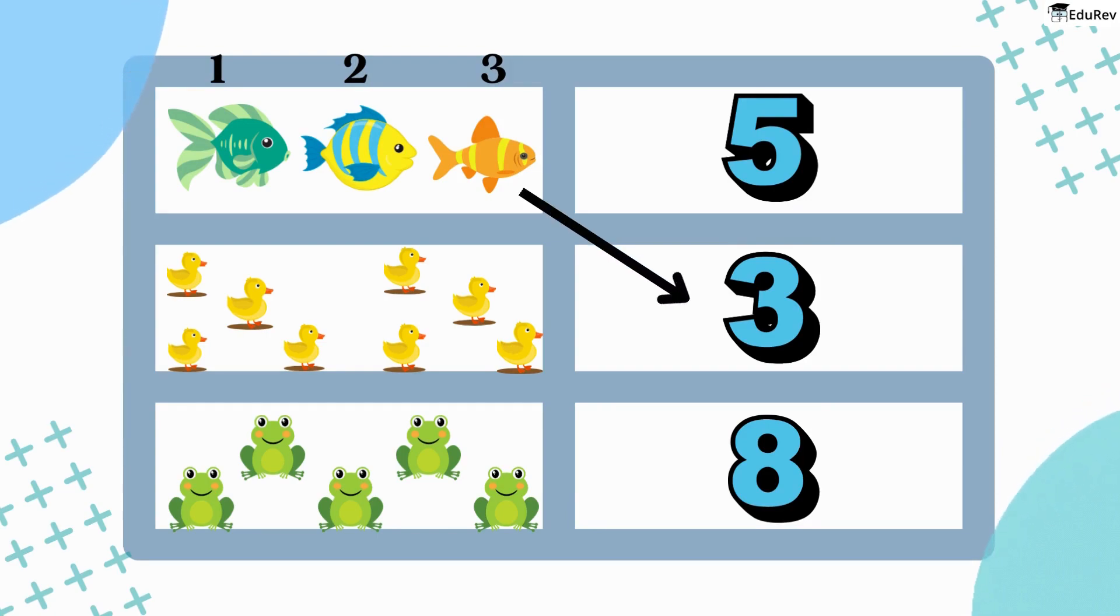how many ducks are here? Let's count. 1, 2, 3, 4, 5, 6, 7 and 8. Here are 8 ducks. So, we will draw a line at 8.